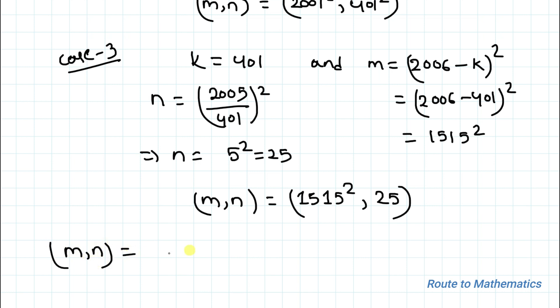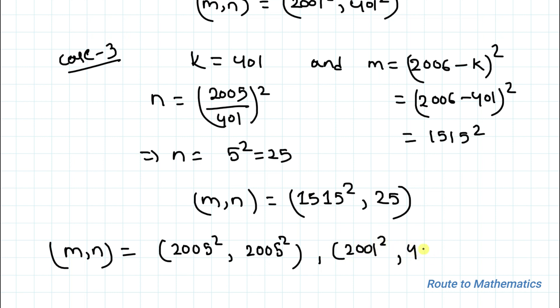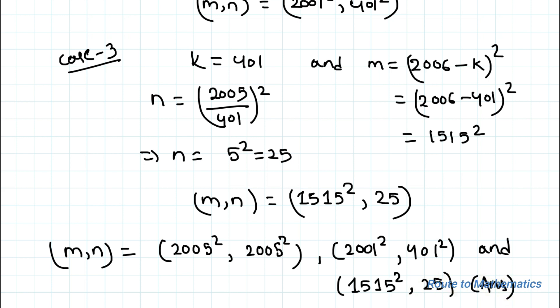Thus the three solution pairs (m, n) are: (2005², 2005²), (2001², 401²), and (1605², 25). I hope you have understood the solution. Thanks for watching — please subscribe to my channel and click the bell icon for more such interesting videos. Thank you.